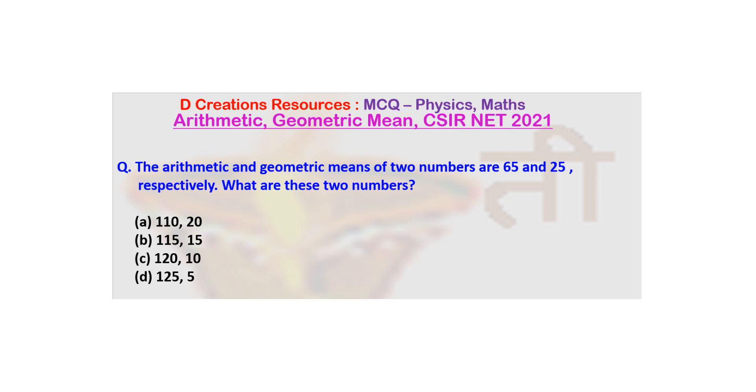The question is: The Arithmetic and Geometric means of two numbers are 65 and 25 respectively. What are these two numbers? The options are: (a) 110, 20; (b) 115, 15; (c) 120, 10; and (d) 125, 5.